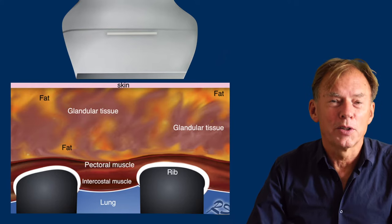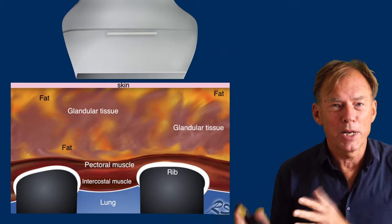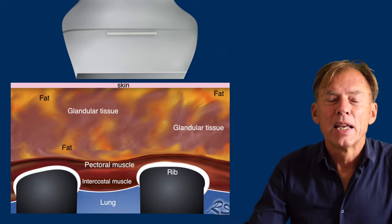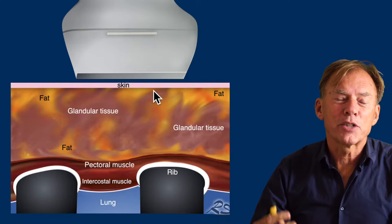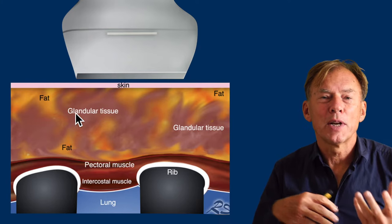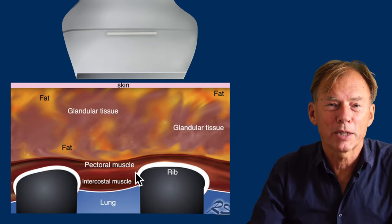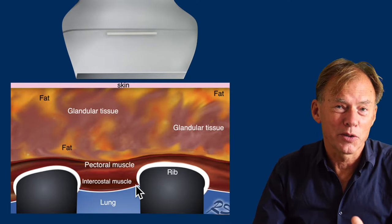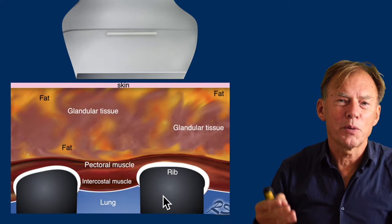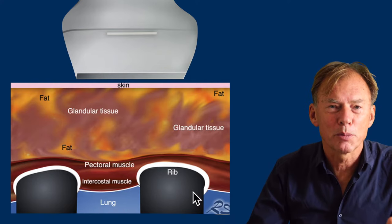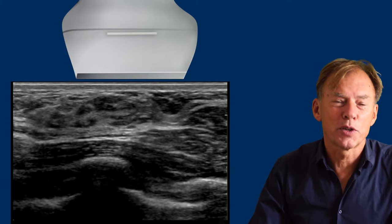First we're going to discuss the normal anatomy and then discuss how to differentiate benign lesions from breast cancer. The first layer is the skin, with underneath it a mixture of glandular tissue and fatty tissue. The deepest layer is the chest wall with the pectoral muscle, the ribs and the intercostal muscles, and then you have the lungs. Posterior to the ribs no imaging is possible due to the absorption of the sound waves, resulting in an artifact called posterior acoustic shadowing.